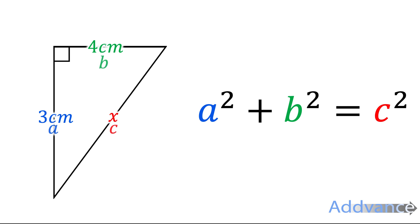And what we know is that the three centimetres is A, the four centimetres is B, and the X is the C. So we always start by labelling the sides A, B and C.